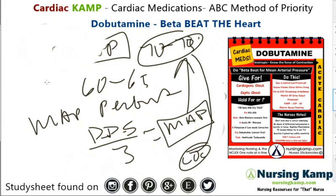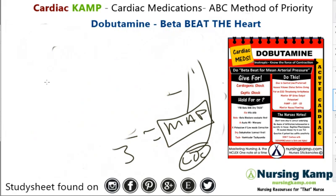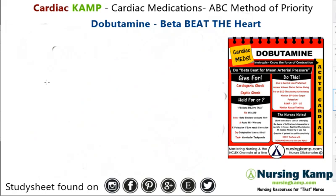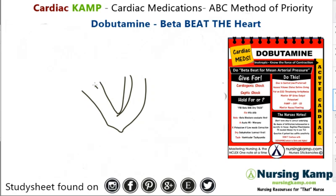Always correct the underlying cause — why do they need dobutamine? Dobutamine is mainly given for CHF and problems with patients who have a low ejection fraction, whether it's hypertrophy or cardiomyopathy.